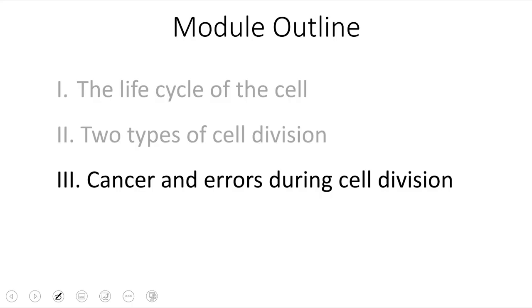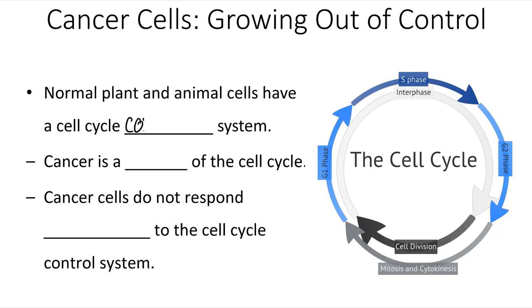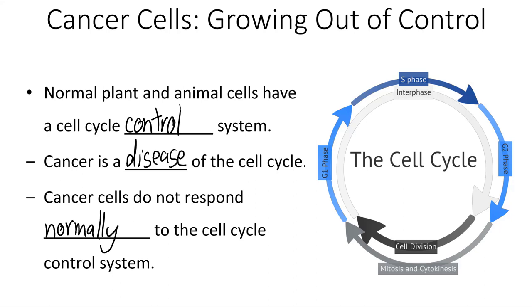Normal plant and animal cells have a cell cycle control system. Cancer is a disease of this cell cycle. Cancer cells do not respond normally to that cell cycle control system — a cancer cell will just continually go through interphase and cell division over and over without resting.